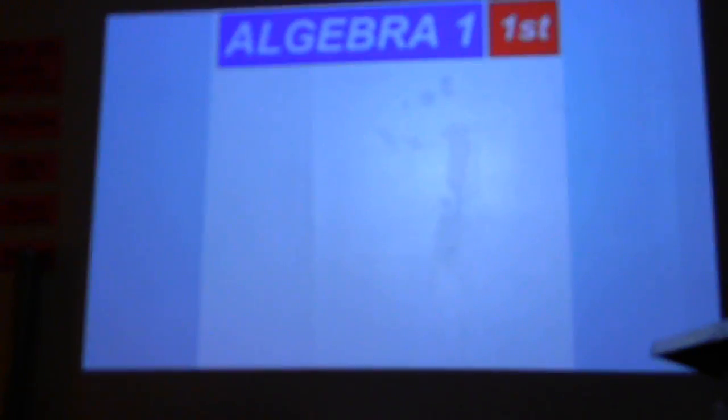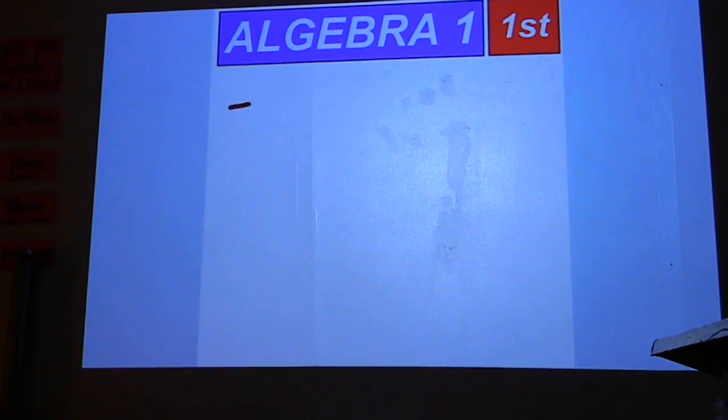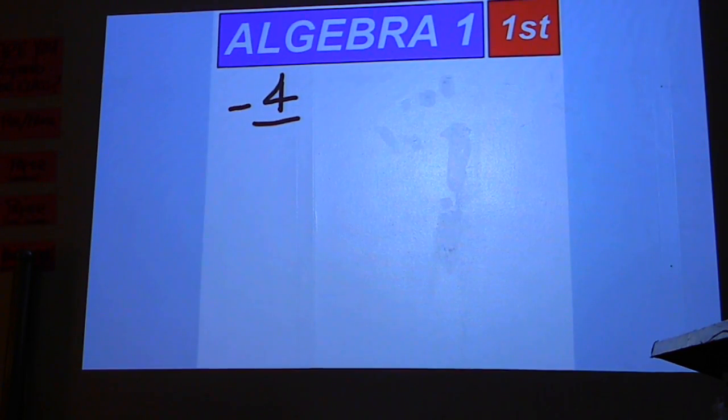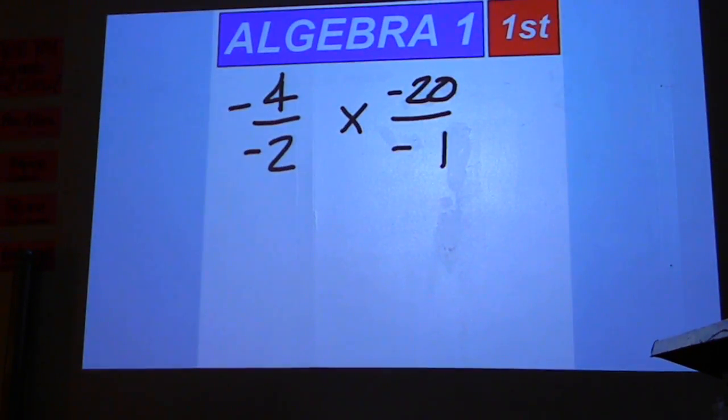All right, here's what we're doing today. Let's say, for example, you have a negative 4 over a negative 2. You can multiply that by a negative 20 over a negative 4.